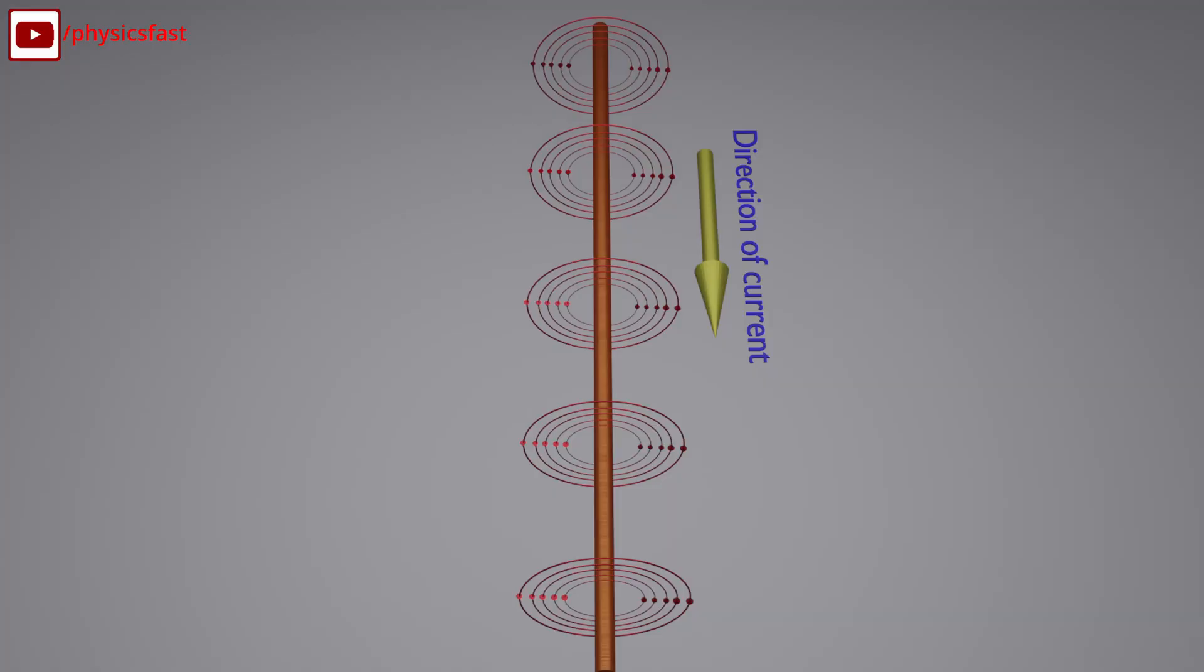When current flows through a long conducting wire, a magnetic field is created around it.